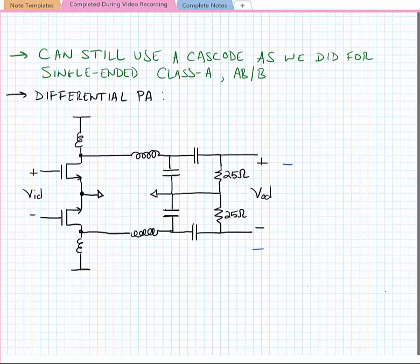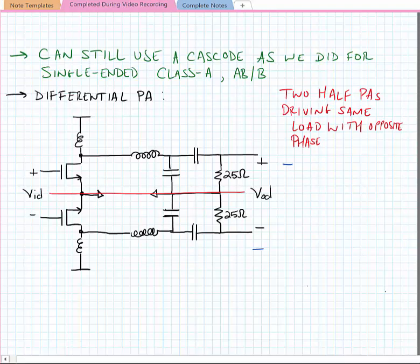Effectively, what we have here is an amplifier that has symmetry about this common ground, or in other words, we have two half power amplifiers that are driving the same load with an opposite phase. Because of this, essentially each half PA only has to drive half of the power that it would if it were a single-ended PA.